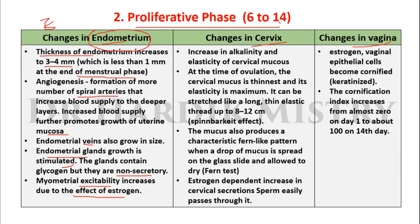Changes in the cervix during the proliferative phase include an increase in the alkalinity and elasticity of the cervical mucus. At the time of ovulation, the cervical mucus is at its thinnest and its elasticity is maximum — it can be stretched like a long thin elastic thread up to 8 to 12 cm, which is known as the Spinnbarkeit effect. The mucus also produces a characteristic fern-like pattern when a drop is spread on a glass slide and allowed to dry, known as the fern appearance, which is present only in the proliferative phase near ovulation.